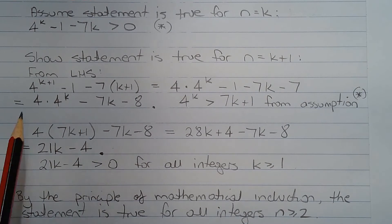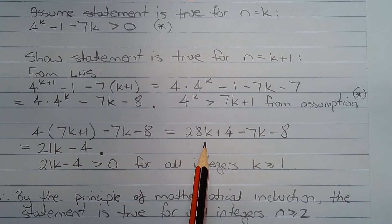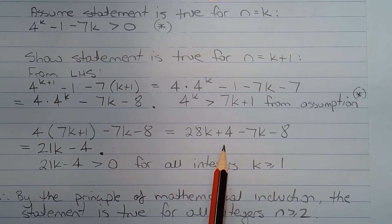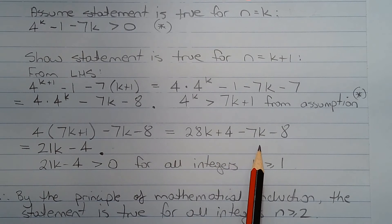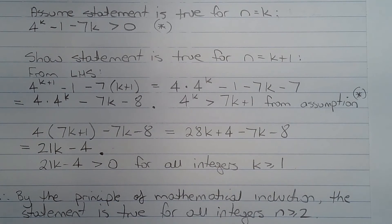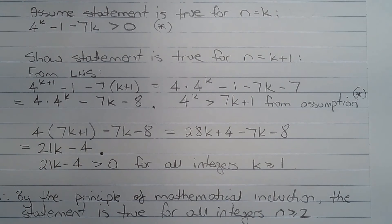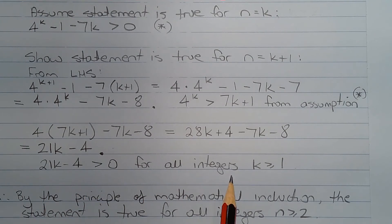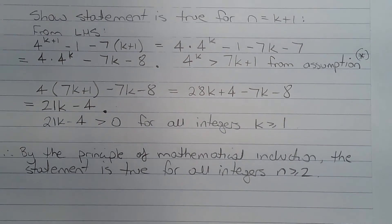Expanding the brackets, that equals 28k plus 4 minus 7k minus 8, and collecting like terms, that equals 21k minus 4. Now 21k minus 4 is greater than 0 for all integers k greater than or equal to 1.